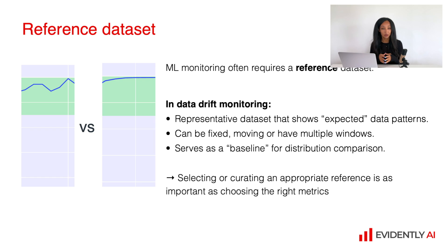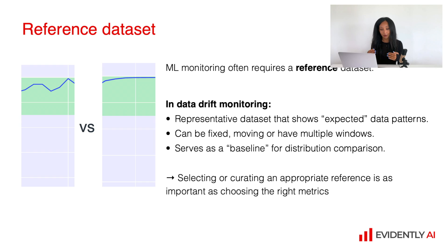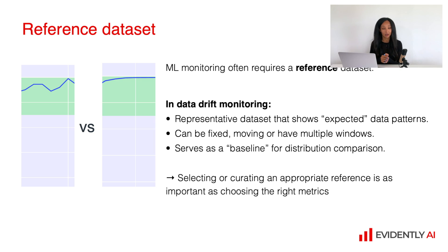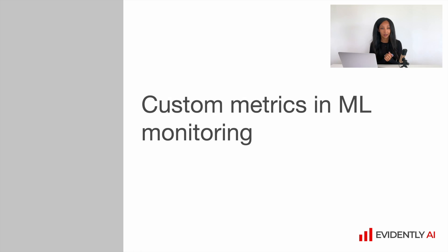For data drift calculation you might have different reference datasets — for example, one for daily calculations and one for weekly calculations, especially if you have strong seasonality. So it's quite open and you might make use of different reference datasets based on the problem statement and known properties of your data. Quite often a reference dataset serves as a baseline for distribution comparison, and in that case consider having different datasets for different data types.